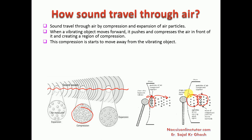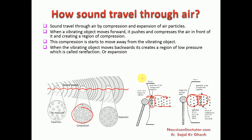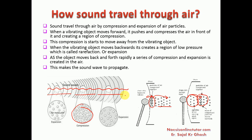When the vibrating object moves backward it creates a region of low pressure called rarefaction or expansion. As the object moves back and forth rapidly, a series of compressions and expansions are produced, and the sound wave moves through the air.